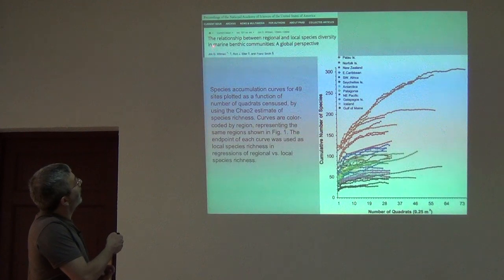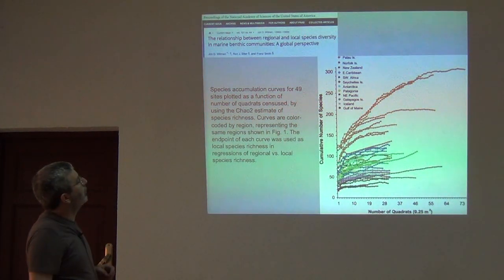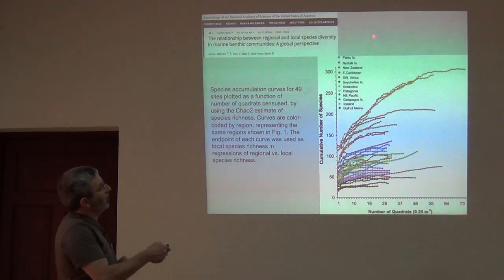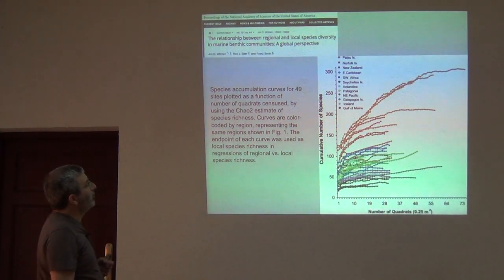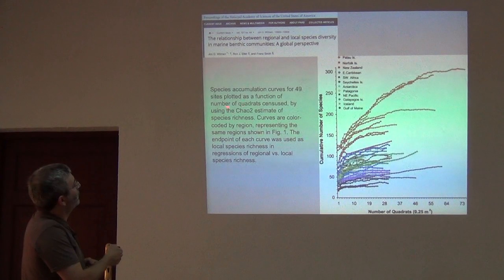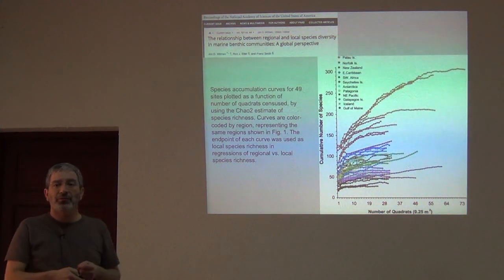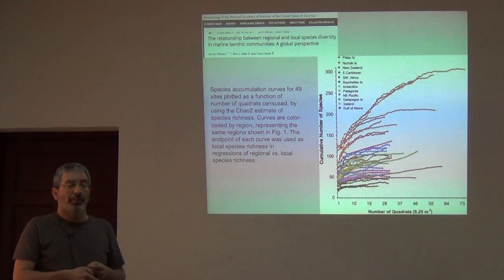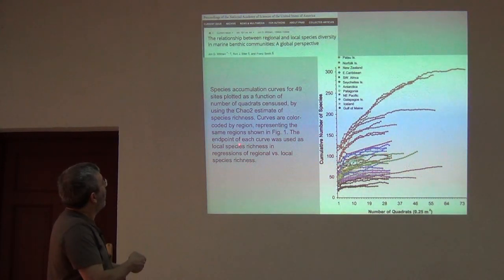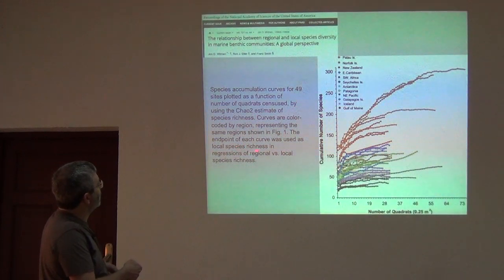So this is a study, the relationship between regional and local species diversity in marine benthic communities of global perspective. So they go out and they found a bunch of sites—49 sites plotted as a function of number of quadrats census, using the Chow 2 estimate of species richness.